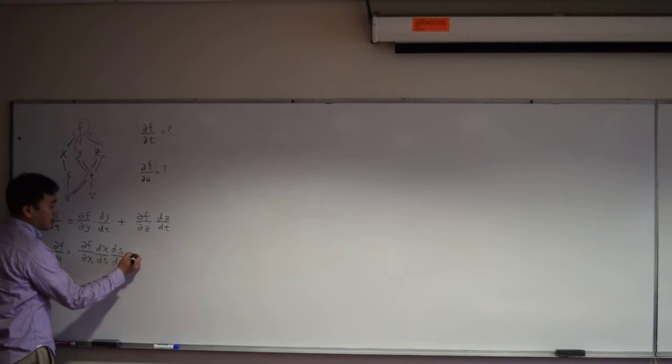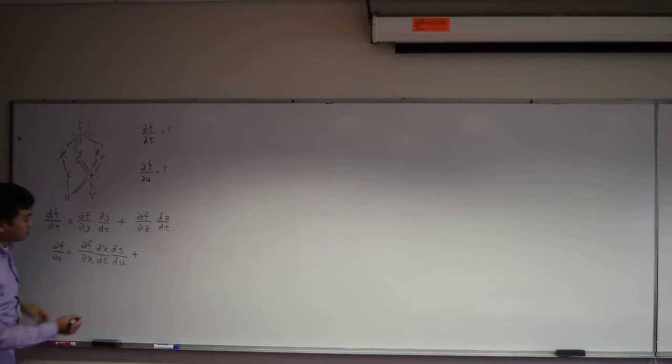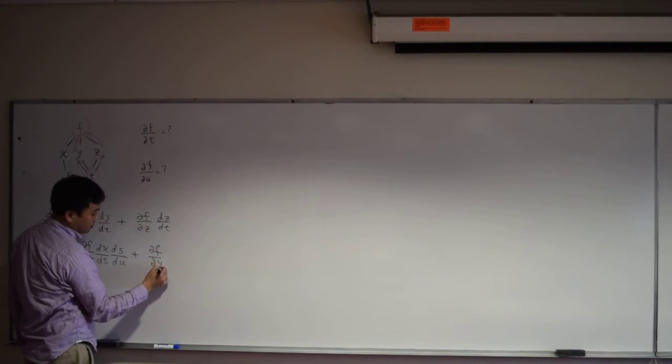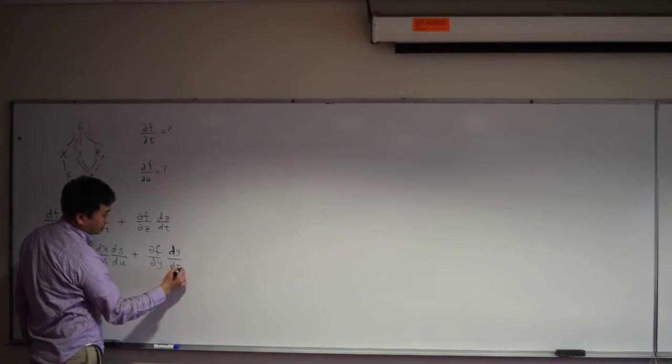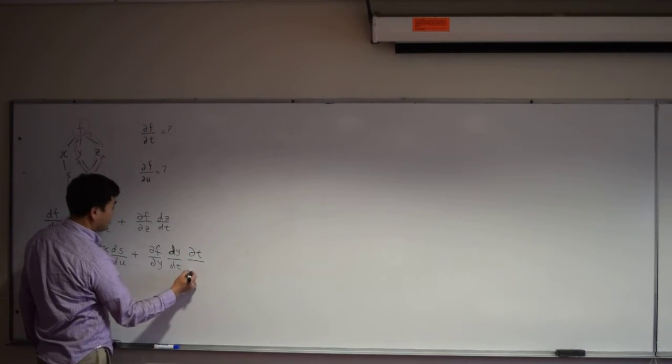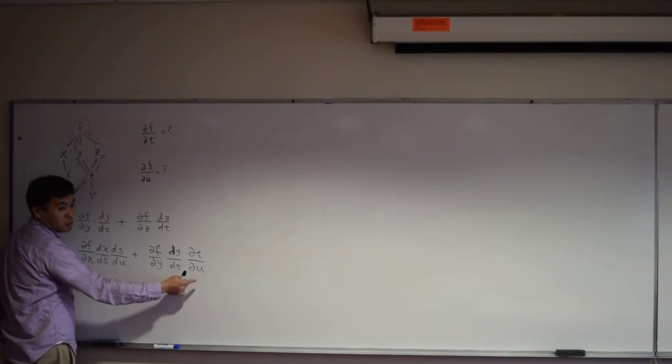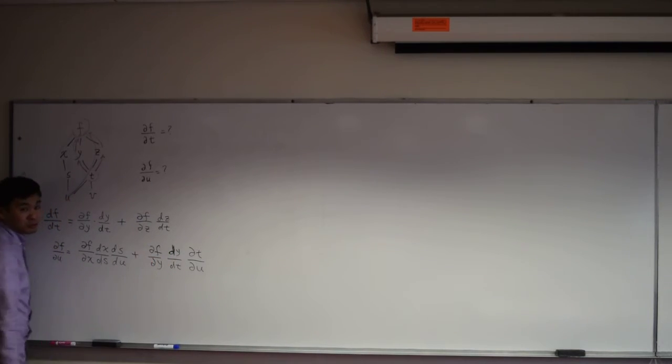Then what about u going through t going through y to f? So ∂f/∂y times dy/dt times dt/du. That tells you what happens if u changes t, t changes y, and y goes to f.